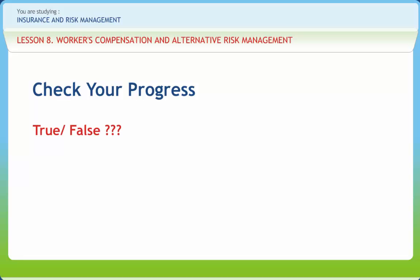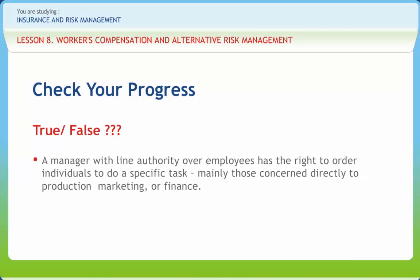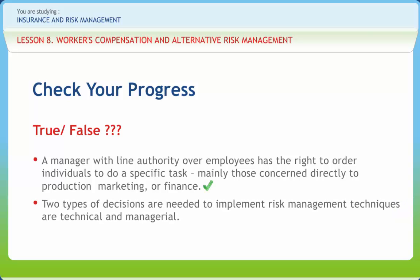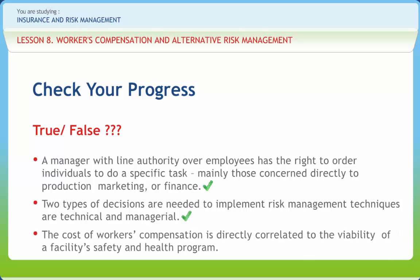Now let us check if we have understood the various concepts discussed in this lesson. A manager with line authority over employees has the right to order individuals to do a specific task, mainly those concerned directly with production, marketing, or finance — right or wrong? Right. Two types of decisions needed to implement risk management techniques are technical and managerial — right or wrong? Right. The cost of workers' compensation is directly correlated to the viability of a facility's safety and health program — right or wrong? Right.